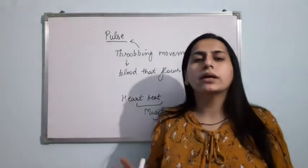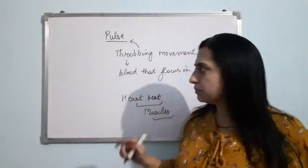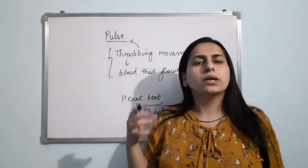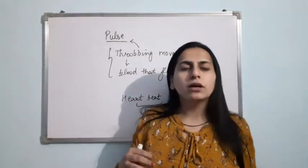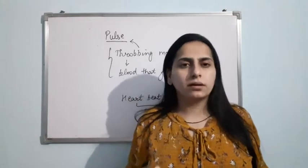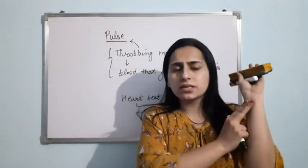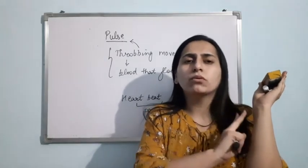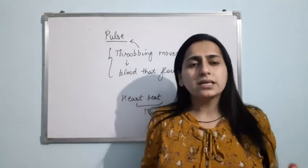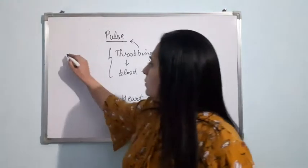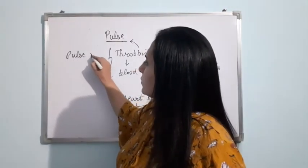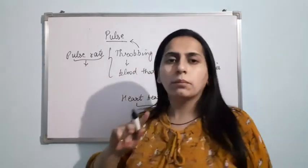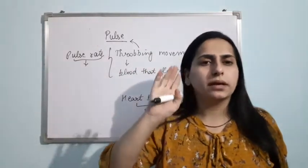Now if I talk in terms of one minute — the throbbing movement is known as Pulse. If you count your pulse in one minute, meaning just keep your finger here for one minute and keep on counting the throbbing movement, that count is your pulse rate.